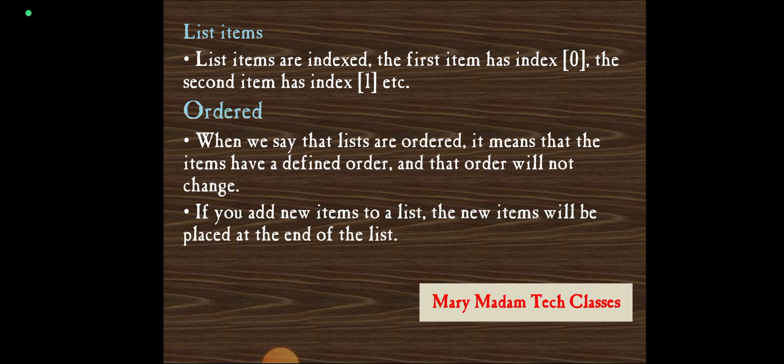Ordered. When we say that lists are ordered, it means that the items have a defined order and that order will not change. If we add new items to a list, the new items will be placed at the end of the list. If you see apple, banana, cherry, three elements are there. If I want to insert again apple, it will be stored after the three elements in the fourth place. So we can say it is an ordered element.